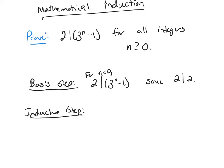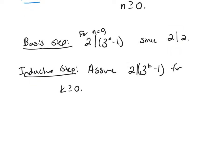Now we do the inductive step. Assume 2 divides 3 to the k minus 1 for k greater than or equal to 0, and we want to prove it's true for n equals k plus 1. Because 2 divides this value, then 3 to the k minus 1 equals 2 times m for some integer m.